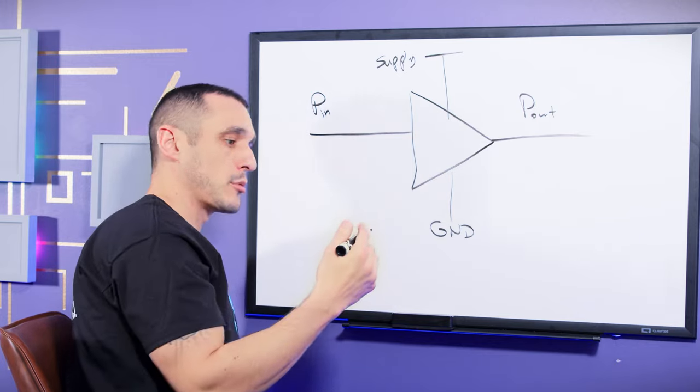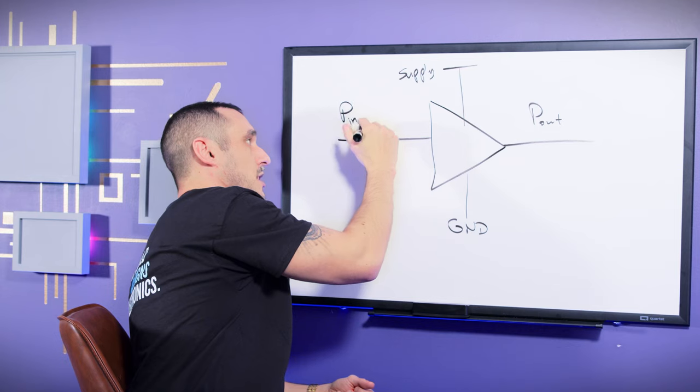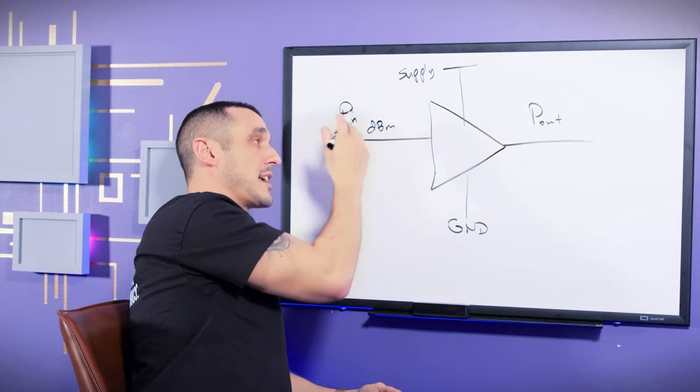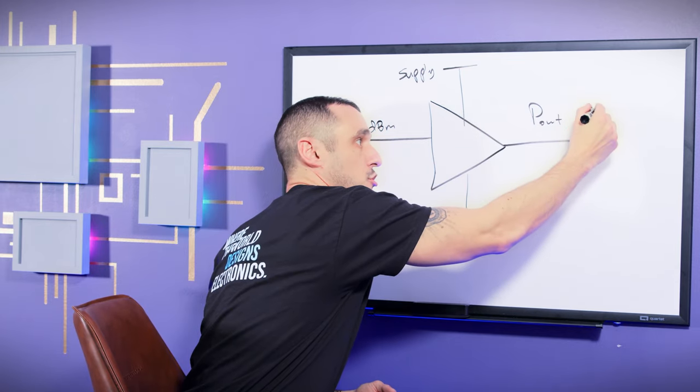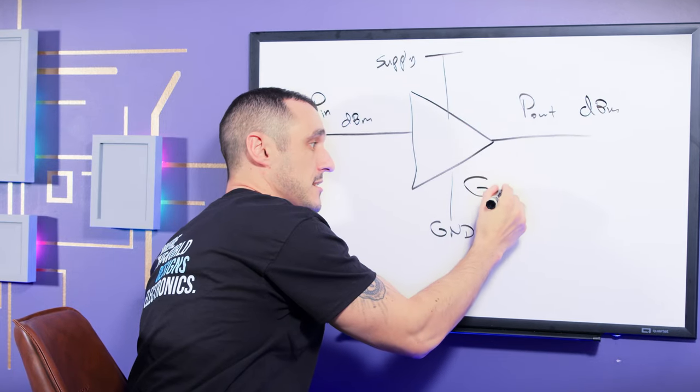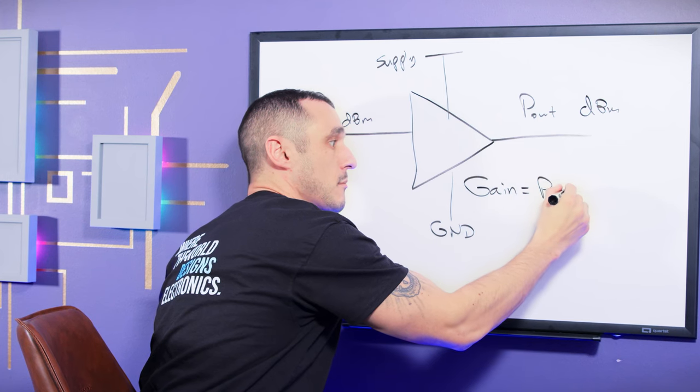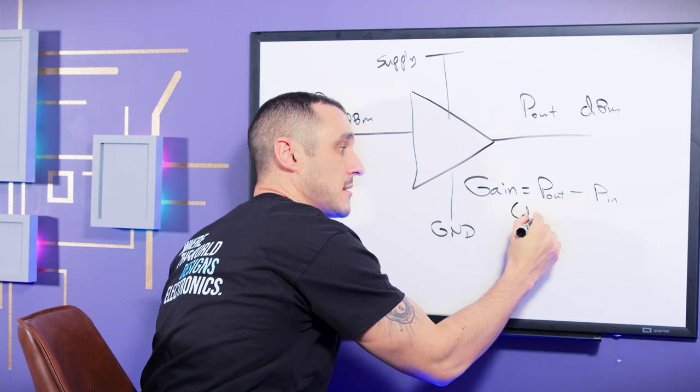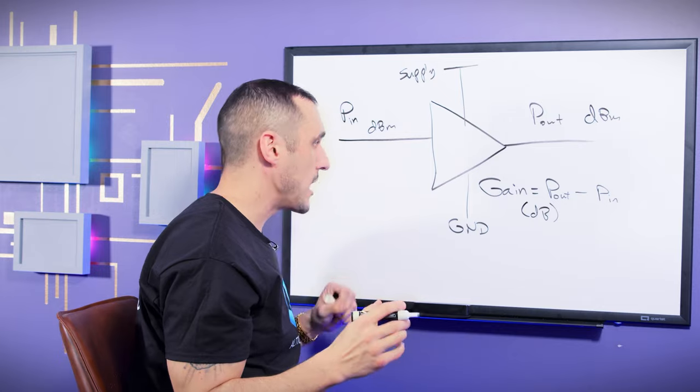Now, the power in and the power out are related by a gain term. Power in is normally measured in the RF world in dBm. So this is decibels with respect to one milliwatt as a reference. This would also be measured in dBm. And then the gain of this power amplifier is equal to P-out minus P-in. And this is measured in decibels or in dB. You could convert this to a ratio if you want, that's fine.